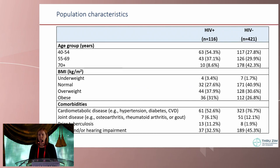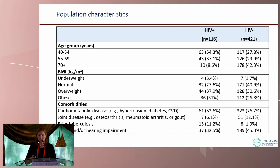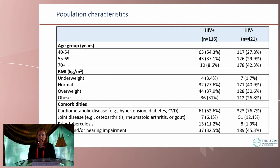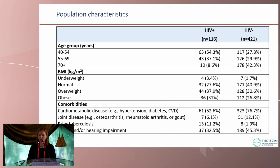Looking at population characteristics across the 116 individuals living with HIV and the larger HIV-negative group: more older participants were HIV-negative. Women living with HIV were more commonly both obese and underweight compared to the HIV-negative group. Cardiometabolic diseases were very common — more than half the women had hypertension, diabetes, or cardiovascular disease. Eleven percent of those living with HIV had prior tuberculosis, and vision and hearing impairments were common, as expected in an older population.